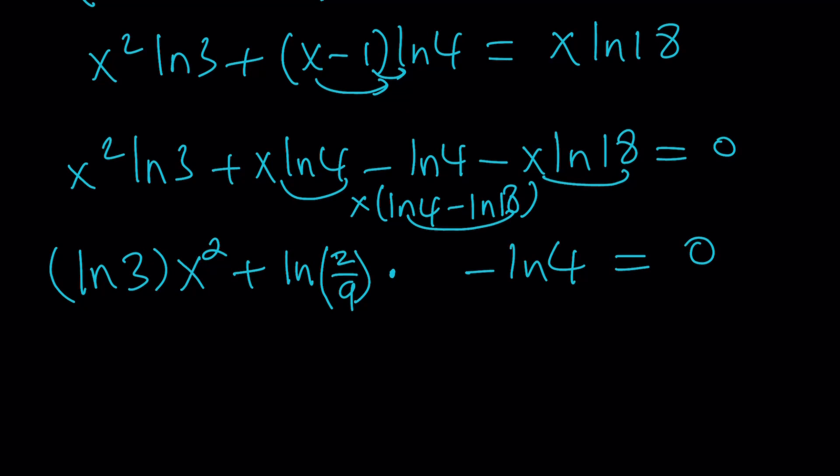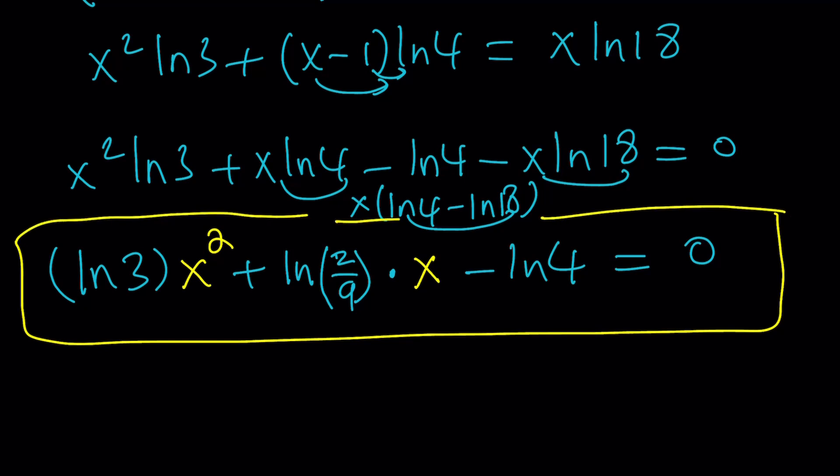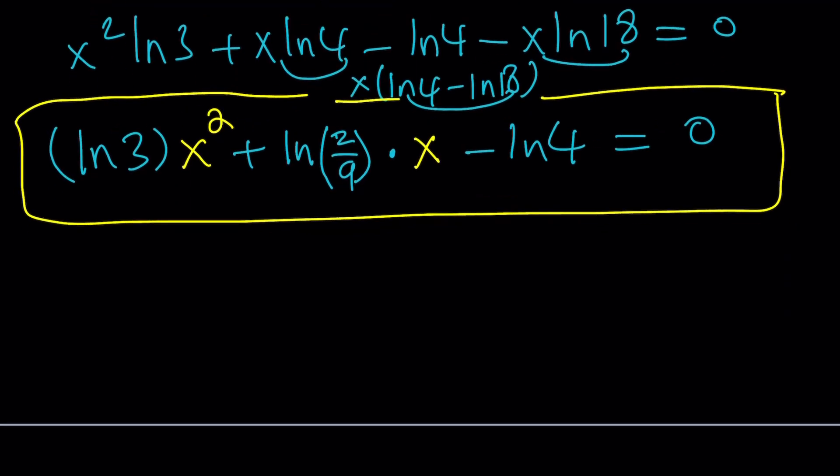And notice that this is the difference of two logs. So, it's going to turn into the log of a quotient, which is ln 4 over 18. So, we can write it as 4 over 18 or simplify it and write it as 2/9. And let's go ahead and put that in parentheses because that's a fraction. And then multiply this by x. And then minus ln 4 is going to be our constant equals 0. Now, if you pay attention to the x and x squared, this should look quadratic to you.